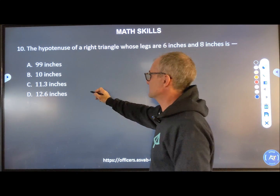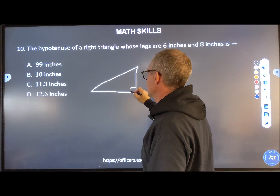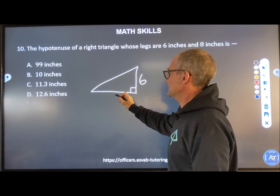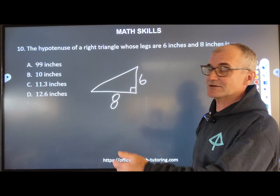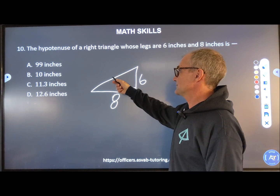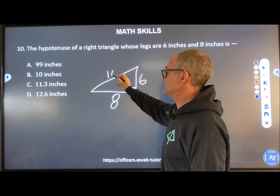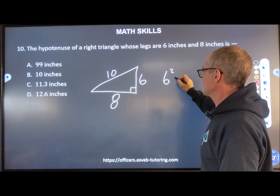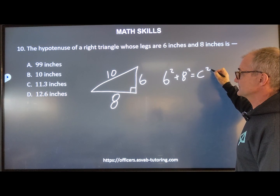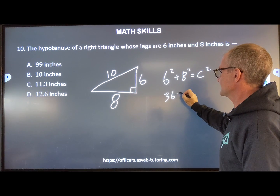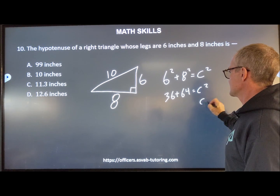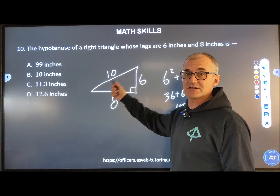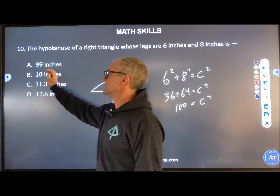Number ten: find the hypotenuse of a right triangle whose legs are 6 and 8. You might recognize that as a 3-4-5 triangle — each side doubled gives 6, 8, 10. If you don't know the 3-4-5 triple, use the Pythagorean theorem: one leg squared plus the other leg squared equals hypotenuse squared. So 36 + 64 = c², giving c² = 100, and taking the square root of both sides gives c = 10.